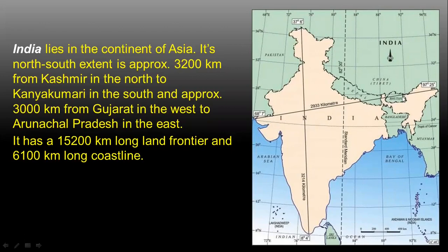It has a 15,200 kilometers long land frontier and a 6,100 kilometers long coastline. The Tropic of Cancer passes through the middle of India, as you can see in the picture.